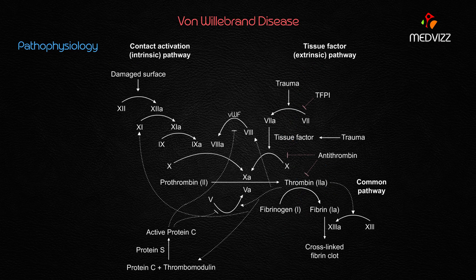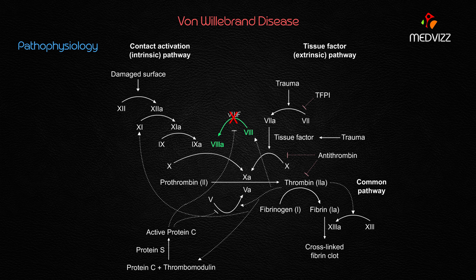Von Willebrand factor also acts as a carrier protein for Factor 8 — this is important to know for your exam. The deficient von Willebrand factor results in a functional deficiency of Factor 8. This is a common MCQ point: when there is von Willebrand disease, the answer for which factor is deficient should be Factor 8.